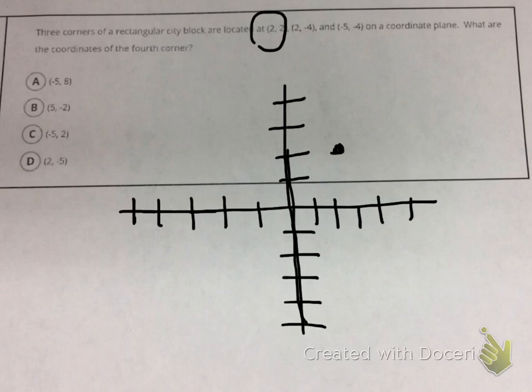The second corner is at 2, negative 4. So I'm going to go over to my, starting at the origin, to the right, 2 jumps on my x-coordinate, and then down negative 4. 1, 2, 3, 4, negative 4. So my second corner will be right there.